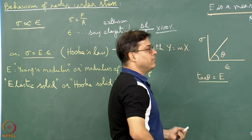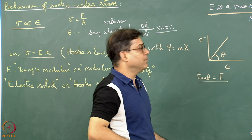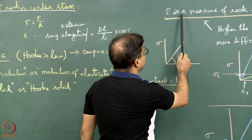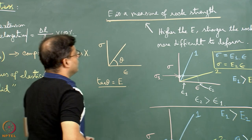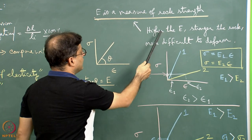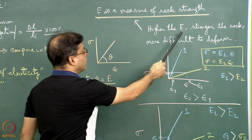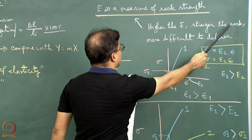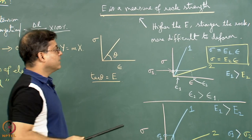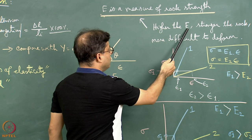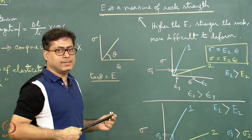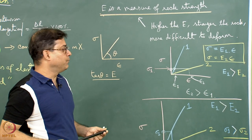There is a statement found in books: E is a measure of rock strength. This means higher the E value for the rock or for any solid, the stronger is the rock, and vice versa. The opposite statement: lower the E value, the weaker the rock.